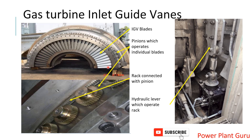It depends on the machine. For example, GE machines operate from 34 to 84 or maybe 86 degrees. But for Mitsubishi MHI gas turbines, 45 degrees is the full-close condition and minus 5 degrees is the full-open condition. We should not be confused by this — the values may change from OEM to OEM.